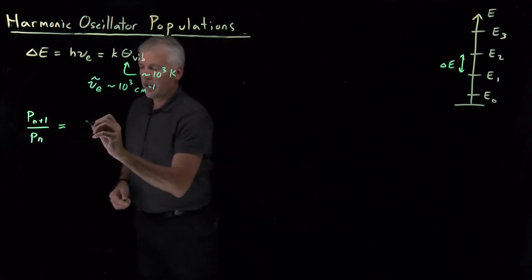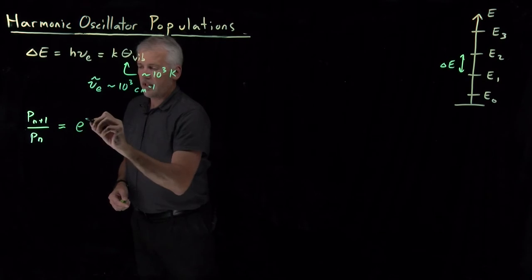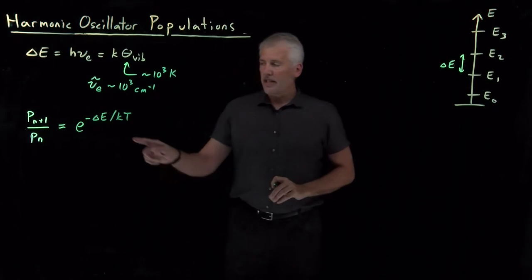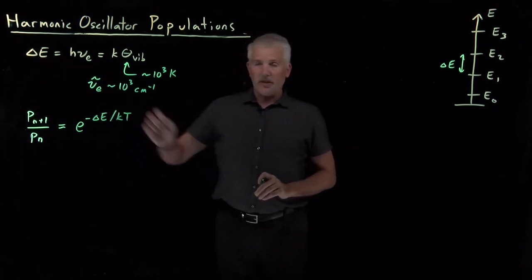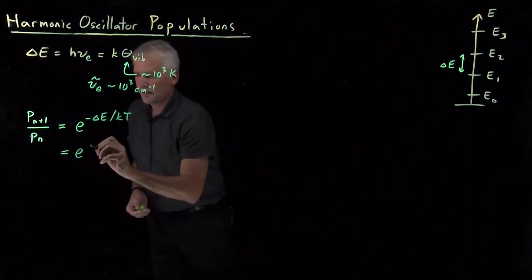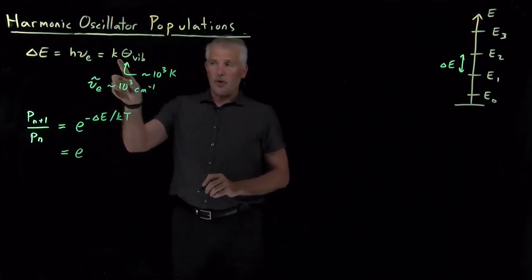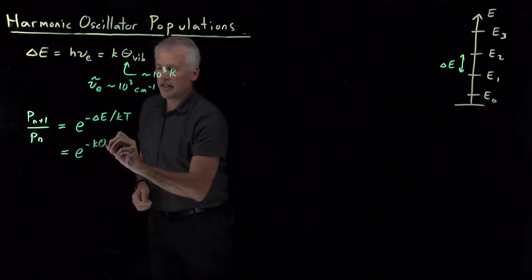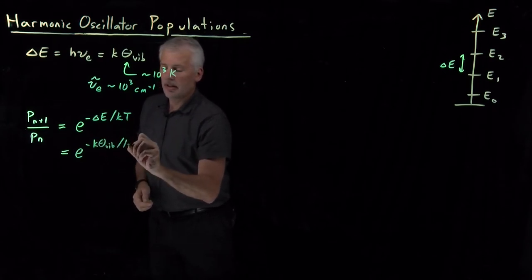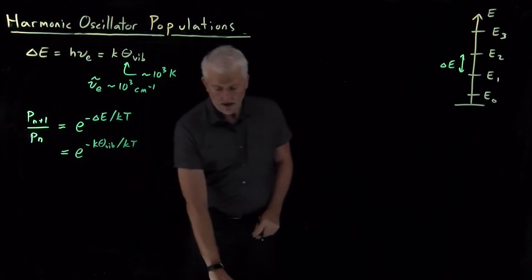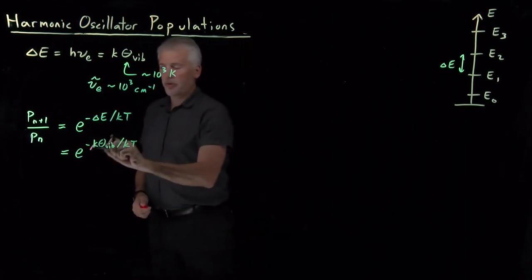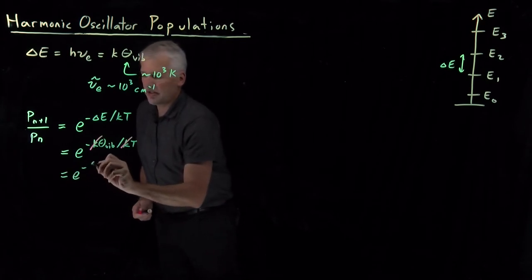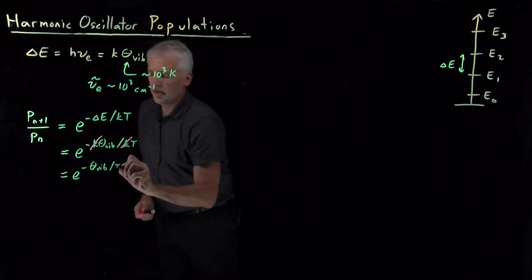We know that this is equal to E to the minus difference in energy between those two states divided by KT, and all the delta E's are exactly the same amount. Those are all equal to H nu or, as we prefer in this case, K times theta. If I write that delta E is K times the vibrational temperature divided by KT, those K's are the same K. Those are both Boltzmann's constant. So that's just E to the minus theta vibrational over T.